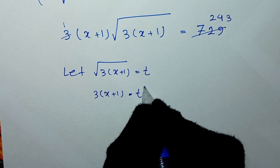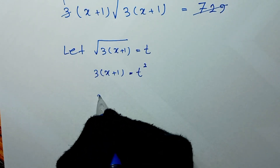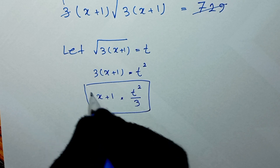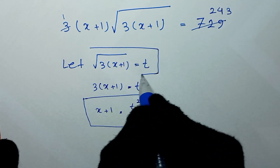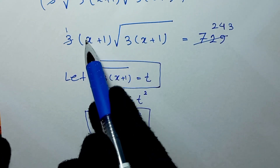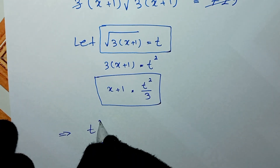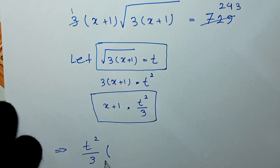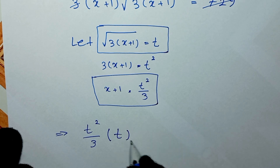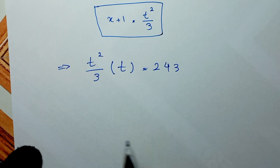We divide both sides of the equation by 3, so x plus 1 is equal to t squared over 3. From these two equations, we can write: t squared over 3 times t is equal to 243.